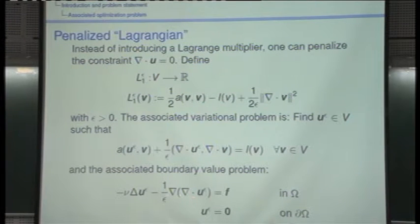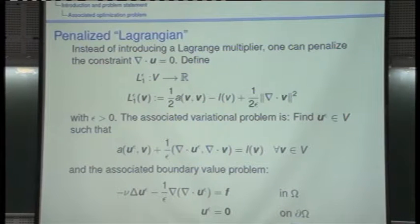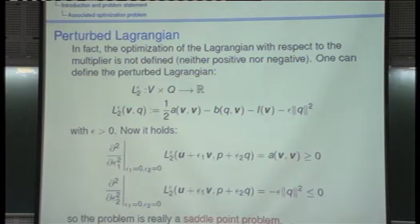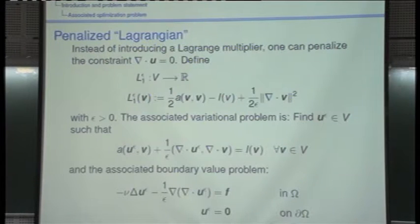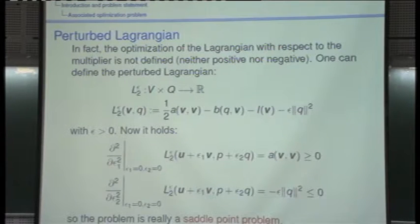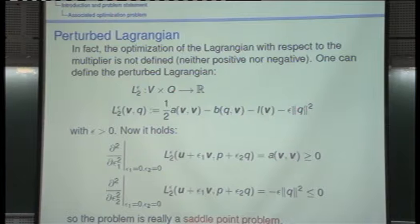The penalized problem corresponds to either penalizing the constraint directly or perturbing the Lagrangian. The variational equations and the Euler-Lagrange equations are given, and the pressure in this case is one over epsilon times the divergence of u_epsilon. We stopped there yesterday.